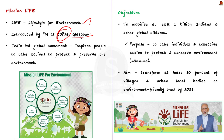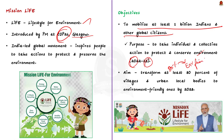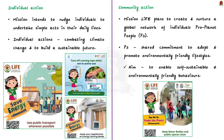Mission LiFE is designed with the objective to mobilize at least 1 billion Indians and other global citizens to take individual and collective action for protecting and conserving the environment in the period 2022–2028. The mission also aims to transform at least 80% of all villages and urban local bodies to environment-friendly ones by 2028. The mission intends to nudge individuals to undertake simple acts in their daily lives, like switching off lights when not in use, using public transport instead of their own car, and turning off running taps when not in active use.